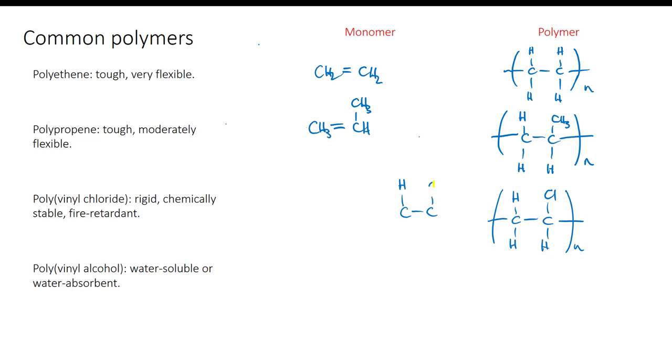To work out what the monomer was, we work backwards, re-drawing the basic structure, removing the side bonds, and adding the double bond that must have been there originally. This gives us chloroethene. The old name for this compound was vinyl chloride, hence the polymer name.